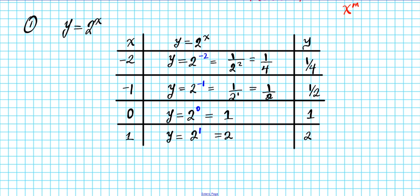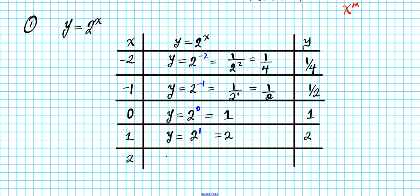We are going to be computing one more output value — the output when x is positive 2. When x is positive 2, we are going to have y equals 2 to the second power. 2 to the second power is 2 times 2, which is 4. So our output in this case will be 4.